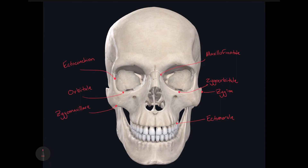The next craniometric point I want to discuss is called the euryon. The euryon is the point of the skull where it has its greatest breadth — the widest part of the skull. So if I draw a line through the widest portion of the skull while looking at the anterior surface, the widest part is about right here. This is a paired craniometric point, and it's called the euryon.